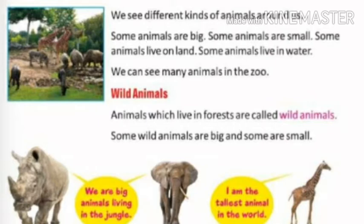So we all know what wild animals are — those animals which live in the jungle or forest. Some of them are big, like elephant, giraffe, rhinoceros, hippopotamus. And some are small wild animals, like wild rabbits. Rhinoceros and elephants are big animals living in the jungle. Giraffe is the tallest animal in the world — it has a tall, long neck.